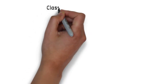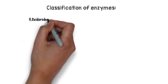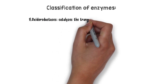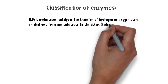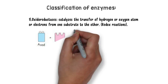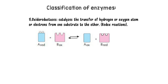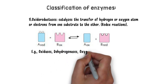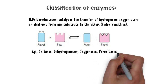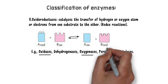Now we have several mnemonics or tricks to remember different examples by category, so let's discuss each category one by one. The first one is oxidoreductases. Oxidoreductases are enzymes that catalyze the transfer of hydrogen or oxygen atoms or electrons from one substrate to the other. These are also called redox reactions, where one substrate is reduced and the other one is oxidized.